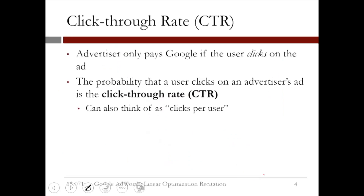Now, while the price per click is important to know, we must remember that the price per click is exactly that — the price that the advertiser pays to Google for a single click of a given ad on a given query. This price is paid only if the user clicks on the ad. But typically, the people who use the Google search engine will not click on every ad that is shown to them. Therefore, we need a way to capture how often users click on ads. This is where the idea of click-through rate becomes useful. The click-through rate is the probability that a user clicks on an advertiser's ad for a given query. You can also think of this as the average number of clicks that we expect per user, and this quantity is defined per advertiser and per query.